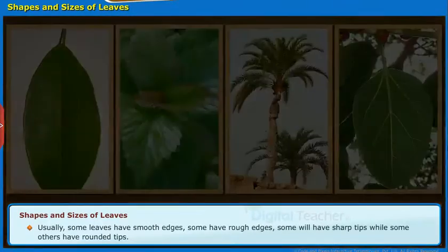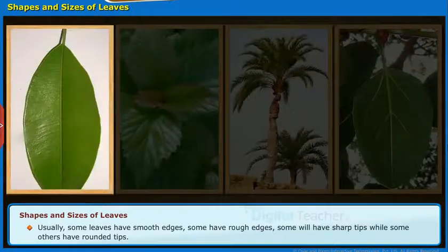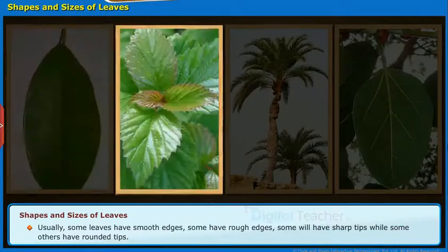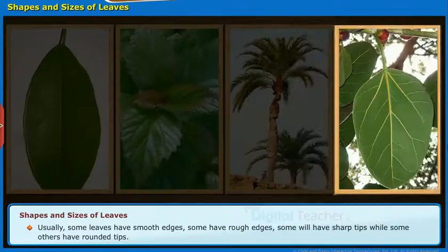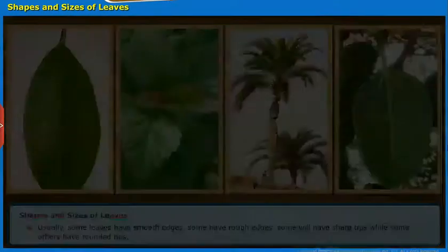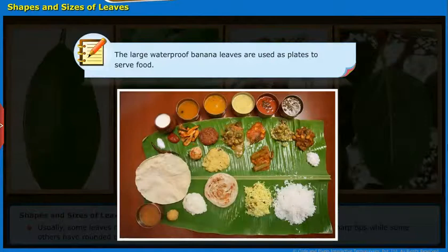Usually, some leaves have smooth edges, some have rough edges, and some will have sharp tips while some others have rounded tips. Make a note: the large waterproof banana leaves are used as plates to serve food.